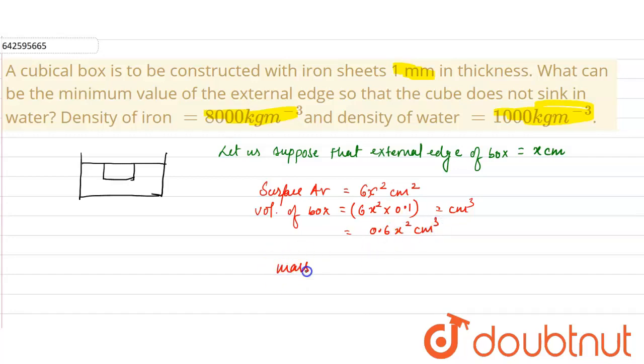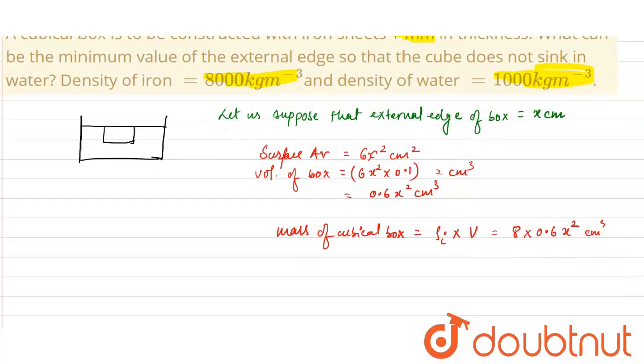The mass of the cubical box will be density of iron times the volume of the box. Density is 8000 kg/m³ or 8 g/cm³, and volume is 0.6x² cm³. So the mass of the box comes out as 4.8x² grams.